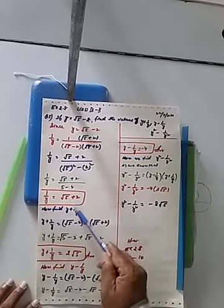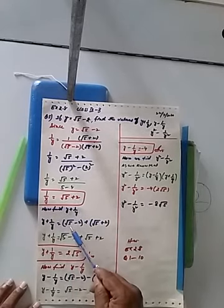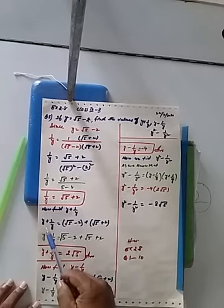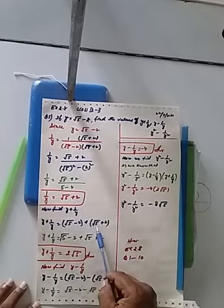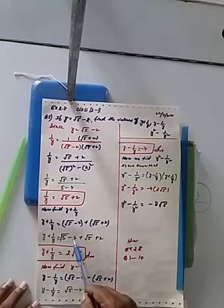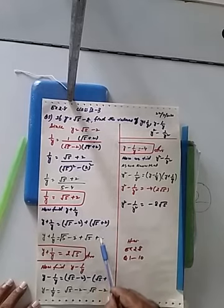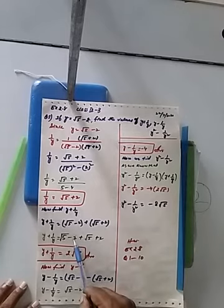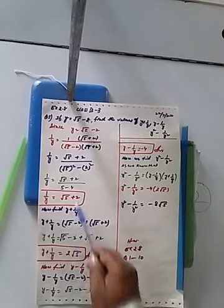Now we find y plus 1 upon y. So y plus 1 upon y equals under root 5 minus 2 plus under root 5 plus 2. The minus 2 and plus 2 cancel each other, and we get 2 under root 5. So the value of y plus 1 upon y is equal to 2 under root 5. This is the first answer.